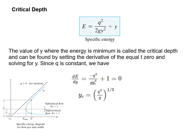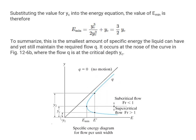Given the specific energy equation, we can ask how to find the minimum energy shown in the diagram. We use the first derivative test: take the derivative of the specific energy equation with respect to Y, keeping Q constant, and solve for Y. The critical depth is given by the resulting equation. Substituting Y critical into the energy equation gives the actual minimum energy value, which equals three-halves times Y_c. This is the smallest specific energy the liquid can have and still maintain the required flow Q, occurring at the nose of the curve at the critical depth Y_c.